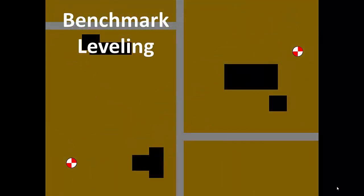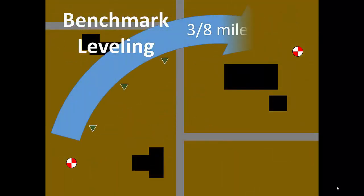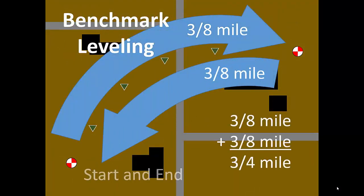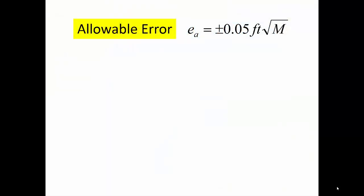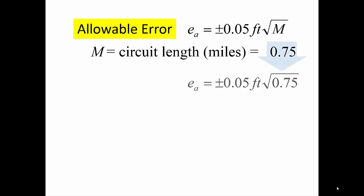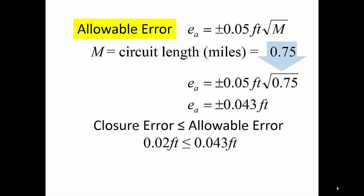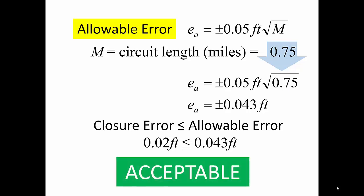For example, consider a closed loop circuit that is three-quarter mile long from beginning to end. The allowable error computation has just one input: circuit length. In this case, three-quarter or 0.75 mile. The result is plus or minus 0.043 feet. Since our circuit closure error is less than or equal to this allowable error, our level circuit is acceptable.